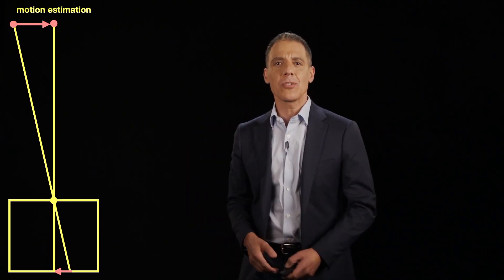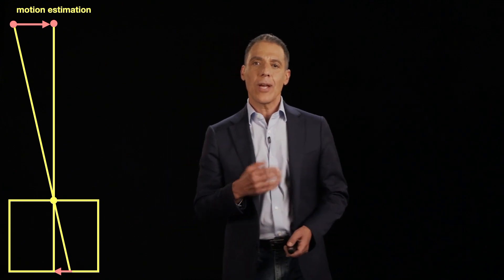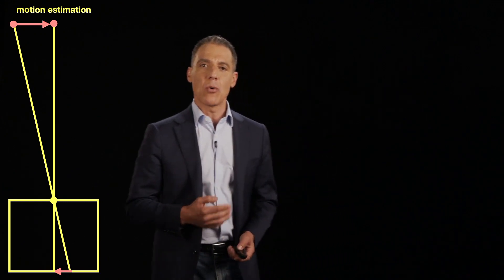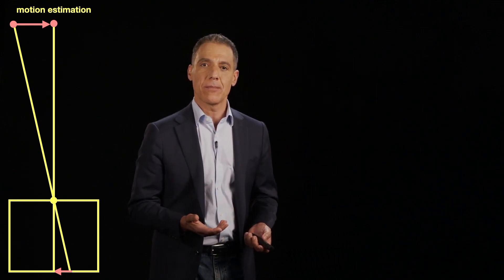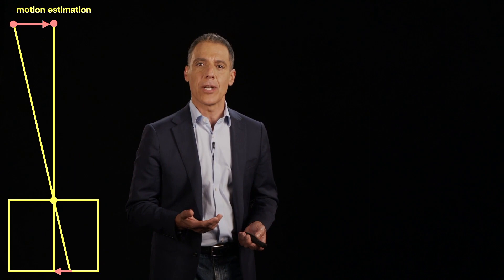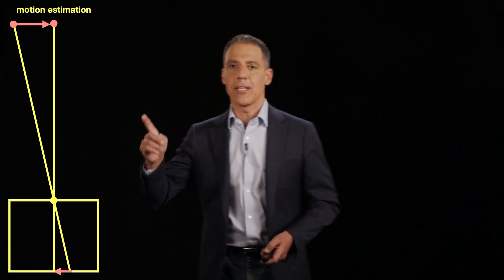In the last segment, we talked about motion estimation, but there was a little sleight of hand there, and I now need to confess that and fix it. So what was the sleight of hand? When we estimate motion, there is an ambiguity, and let's just make sure we understand what that is.